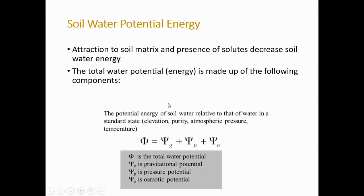So what is the potential energy in the soil? The total water potential in the soil consists of three different components: gravitational potential, pressure potential, and osmotic potential. All three together form the total water potential, which represents the total energy. We need to understand each component individually.